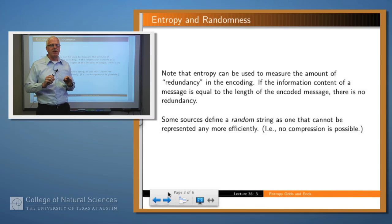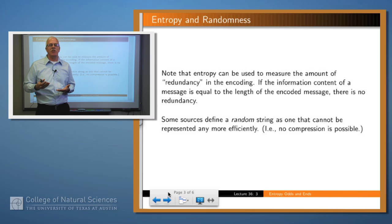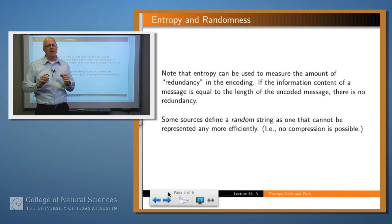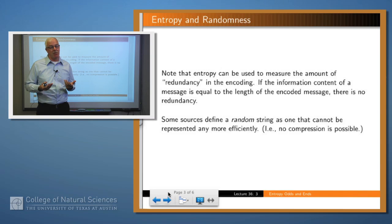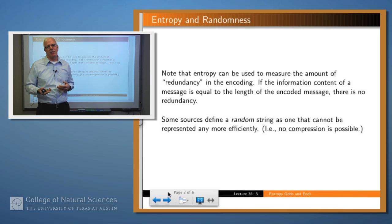Another thing we mentioned is that the entropy of a language can tell us how efficient an encoding is. The closer the encoding is to the entropy, the better the encoding is, because the less redundancy there is. We looked at a particular language early on — namely, if you flip a fair coin — and we gave a naive encoding: heads is zero and tails is one. And we showed that that was in fact the optimal encoding.